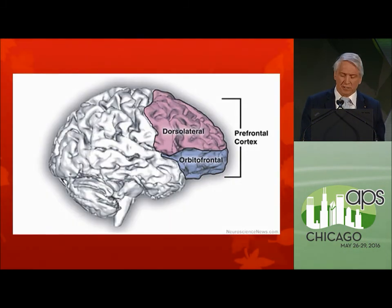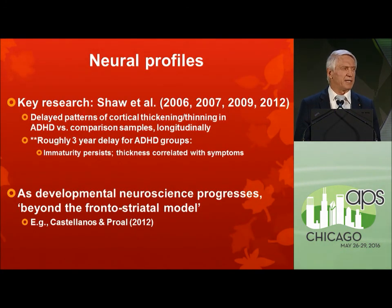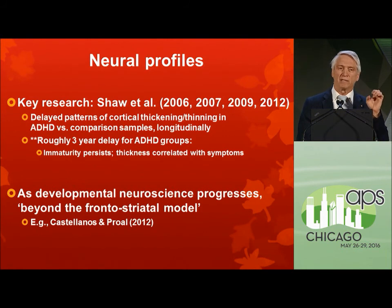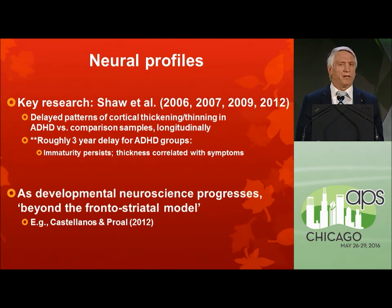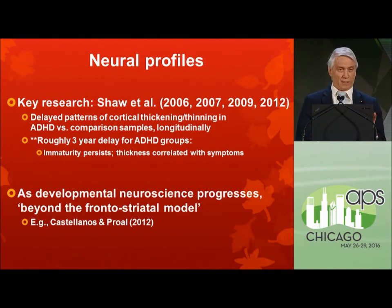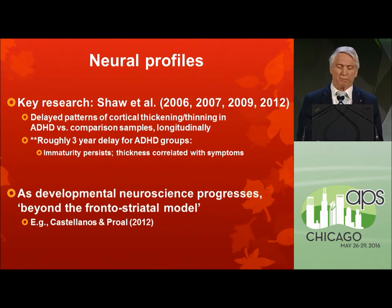What about the frontal cortex? In the important work of Phil Shaw and colleagues at NIH, kids with ADHD are about three to three and a half years delayed in the maximum thickness of the prefrontal cortex — usually around age six in typical development but nine to nine and a half in ADHD populations. As the cortex thins again in adolescence, the same lag persists, and thickness is highly correlated with symptoms. So maybe there really is a neural immaturity. We don't know if it's a direct genetic expression or an epigenetic expression, but immaturity may be a core feature of this condition.